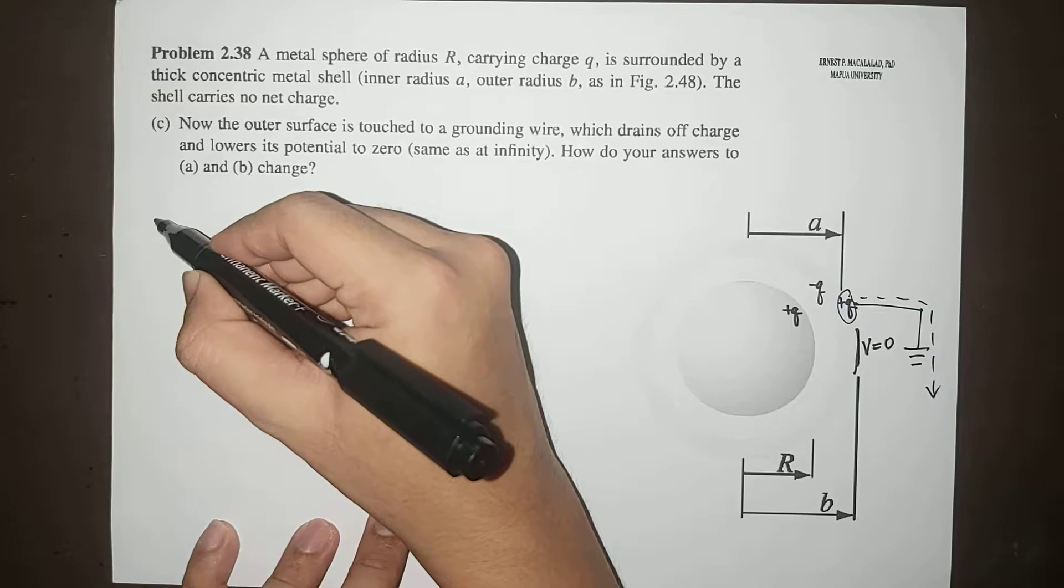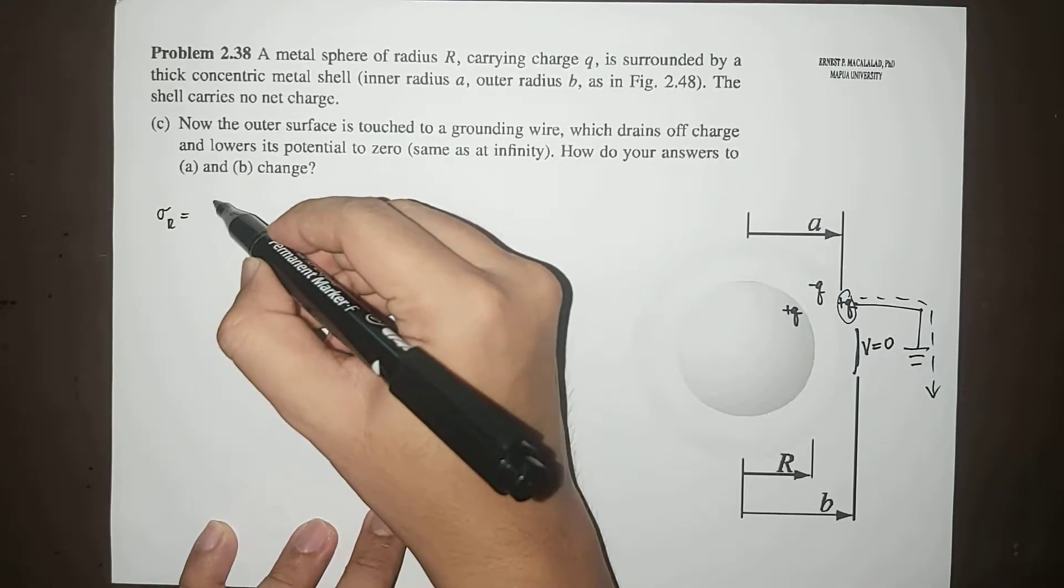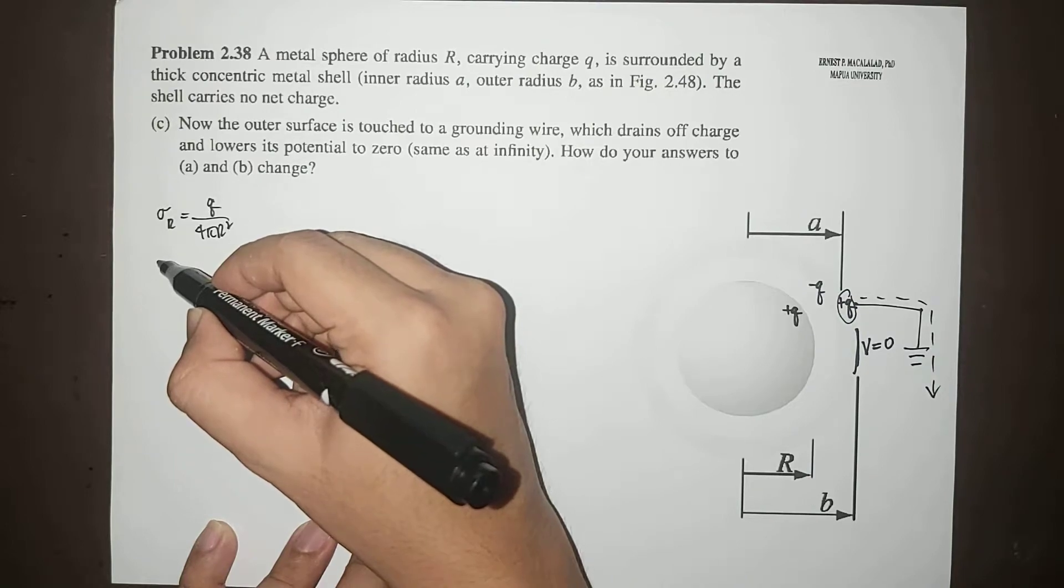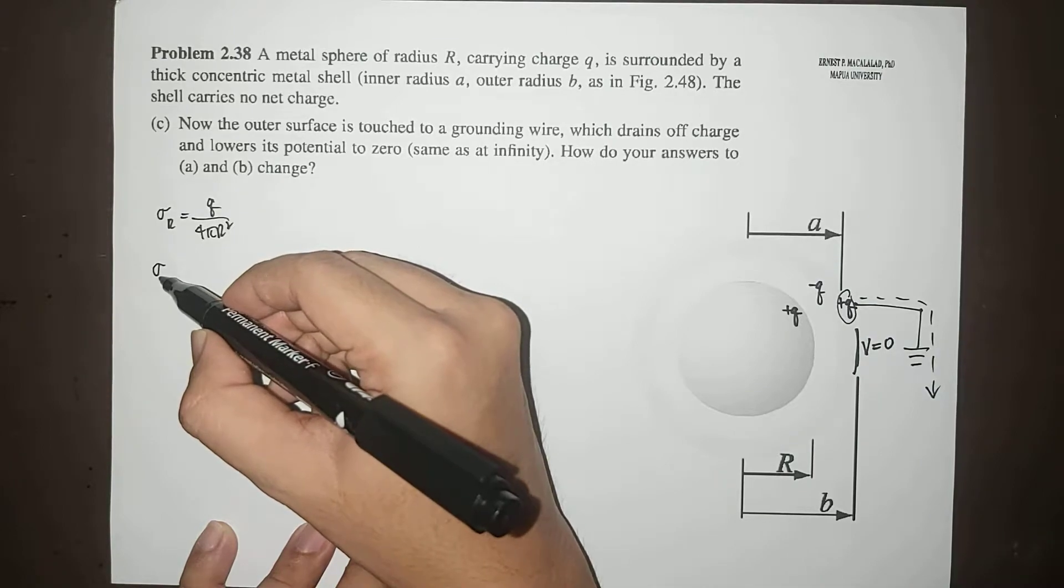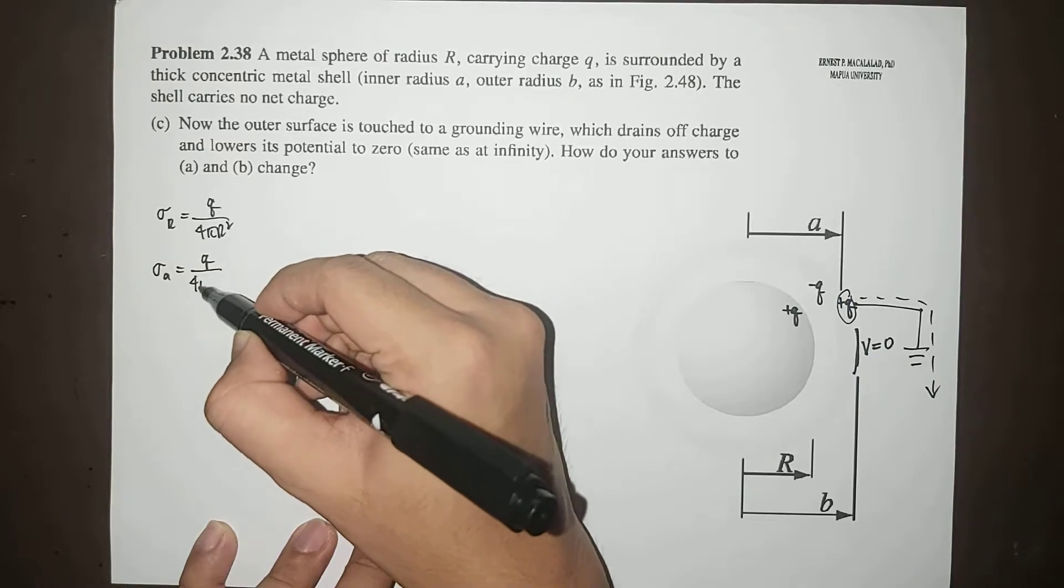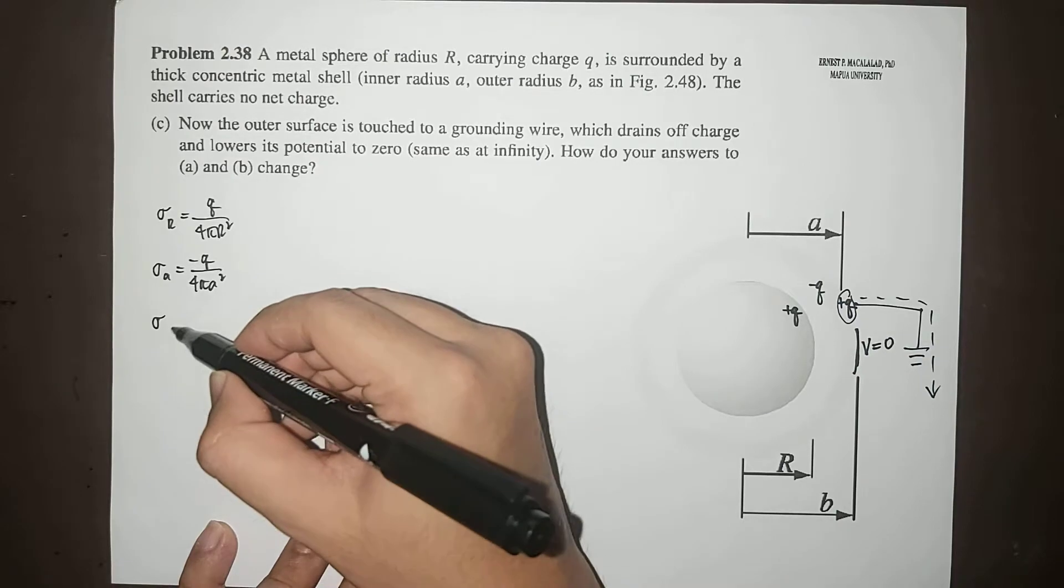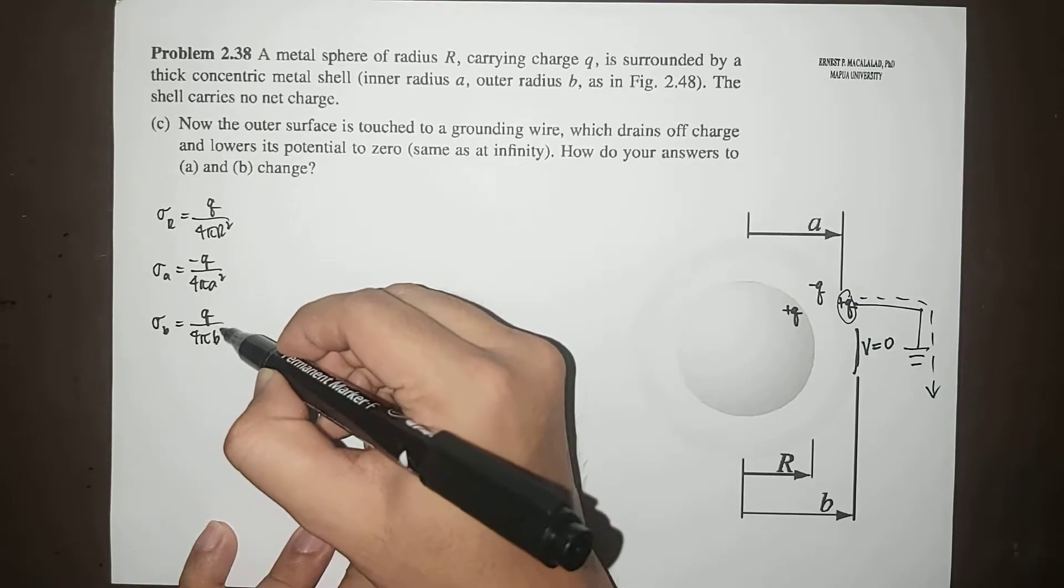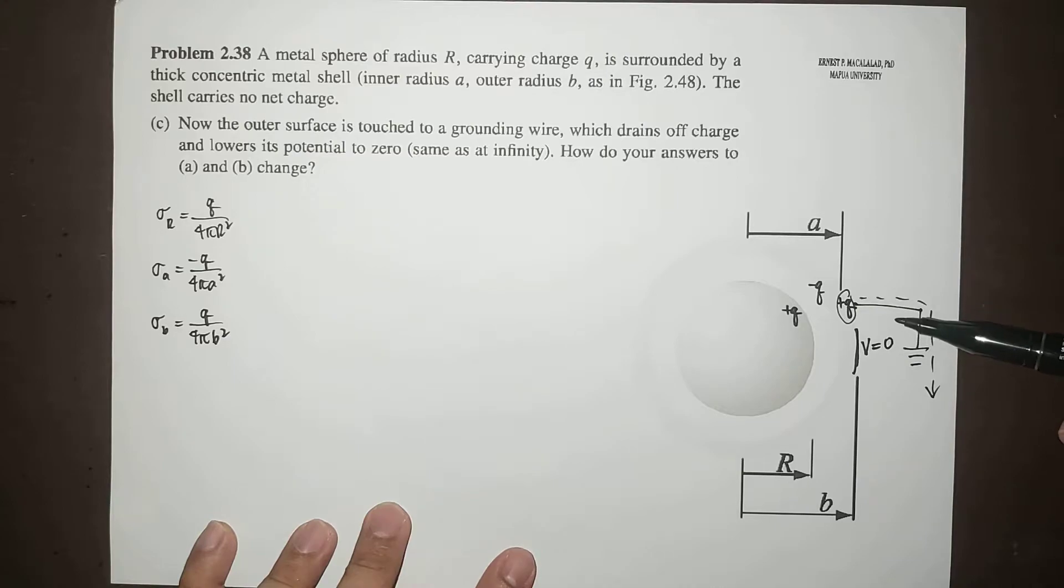Now for letter A, we know that the surface charge density at R is equal to Q over 4πR squared, and then sigma or the surface charge density at A is negative Q over 4πA squared.